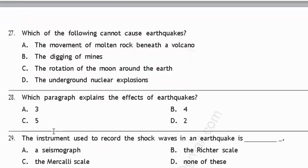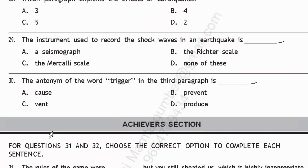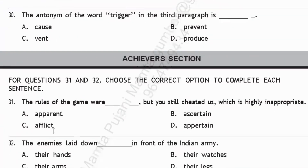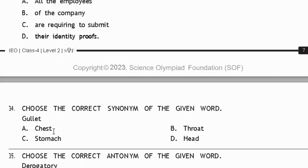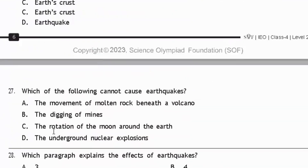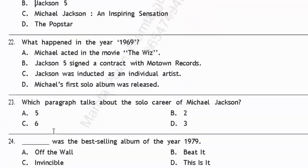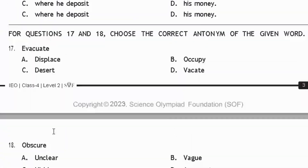The last section is called the Achievers Section. In this section, you will again get questions from grammar and vocabulary, but each question carries two marks, unlike the previous two sections. So be careful while attempting the Achievers Section. Now let's go back to the first section — Word and Structure Knowledge.